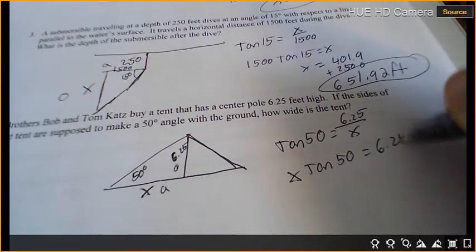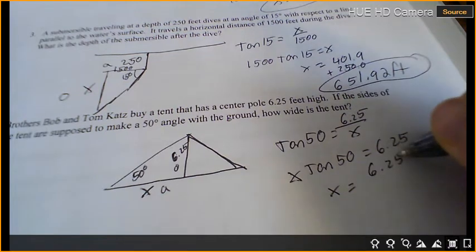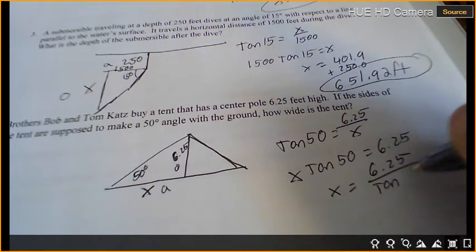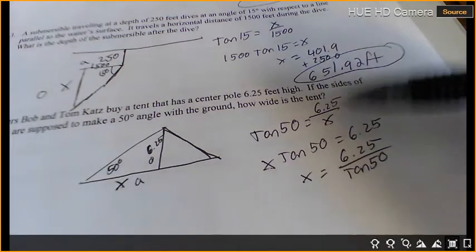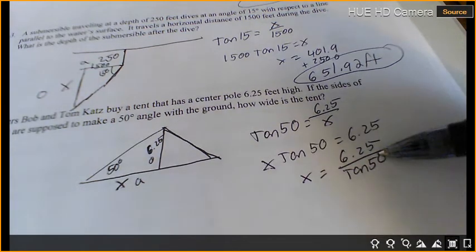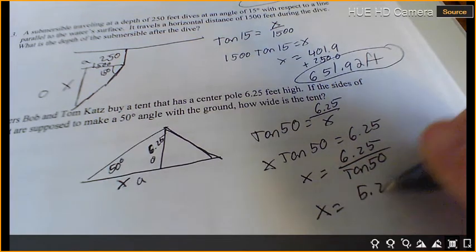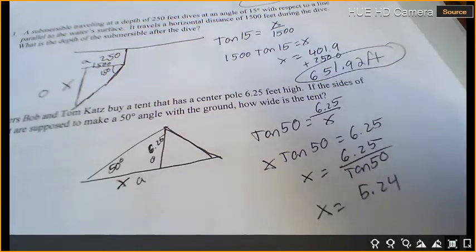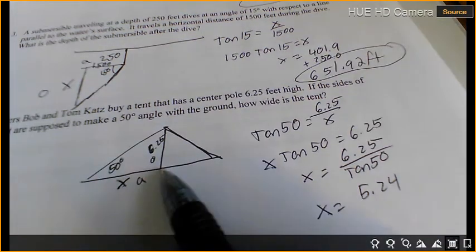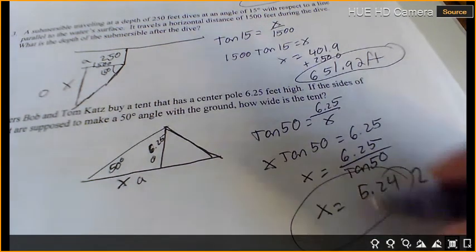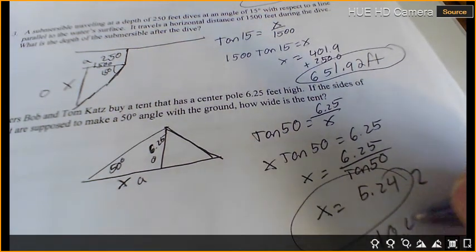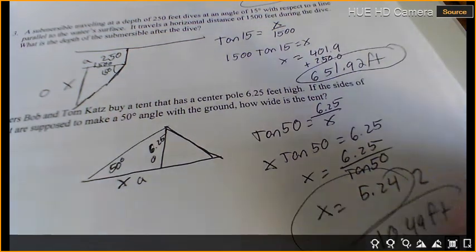And then we divide. As you're getting more and more used to this, you can just skip right down to here. So x equals 5.24. But that's only one half, so what do we do to find the other half? Times this by two, and we get 10.49 feet is how wide the tent is.